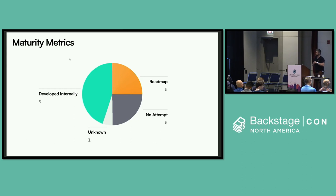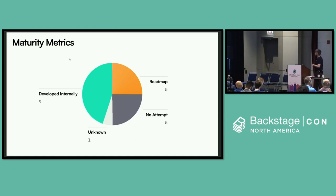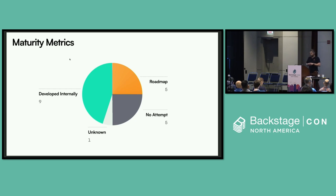On maturity metrics — measuring aspects of the quality of software that teams are developing, whether security, reliability, operability, or compliance — almost half of the 20 companies had invested their own engineering time into building some sort of maturity measurement features into Backstage. They dedicated actual engineering hours to this. And even of the half who hadn't built anything, half of those were thinking about it and planning to invest in this area too.